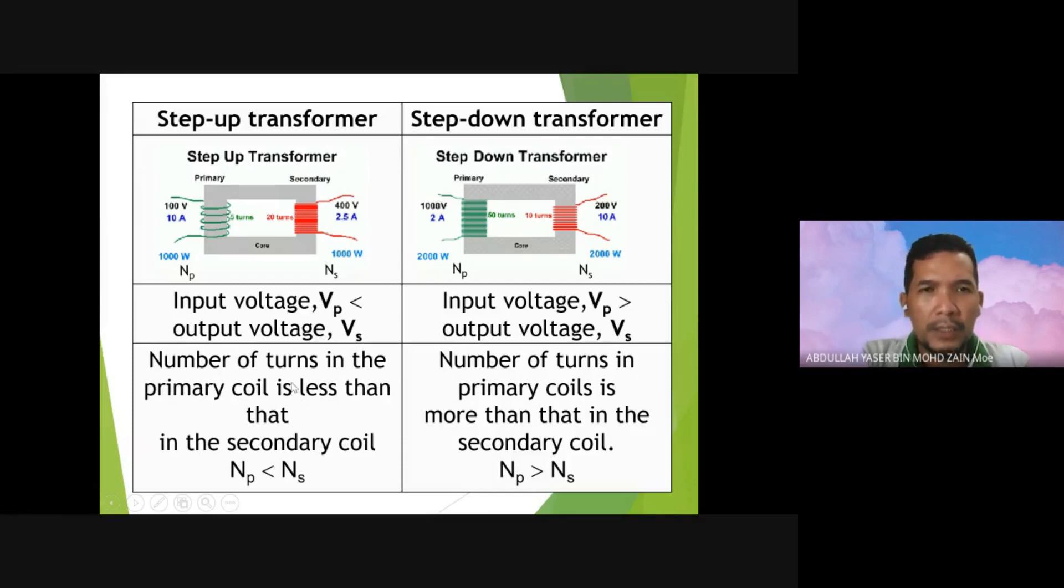VP is less than VS. Why does this happen? The number of turns in the primary coil is less than in the secondary coil. The number of turns in primary is less than NS, so it creates the input of 100 volts and will create 400 voltage output. Let's see the step-up transformer.